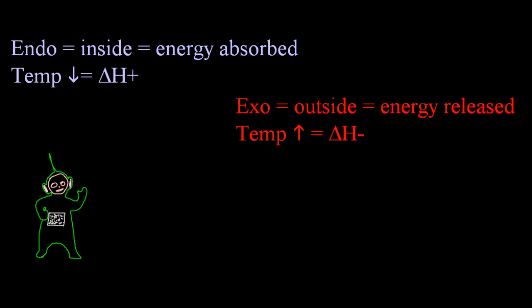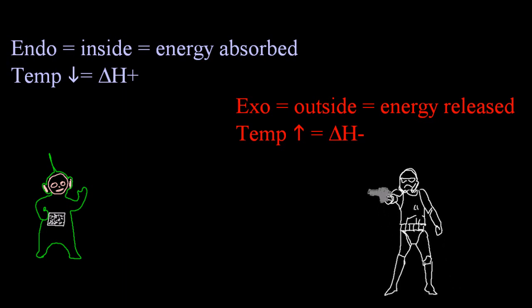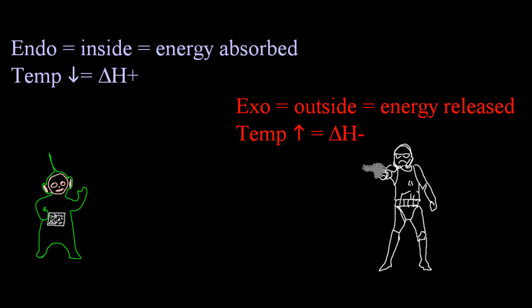Exo — that's outside. Energy is released from your experiment so it's going to feel hotter. Temperature goes up and Delta H is negative.